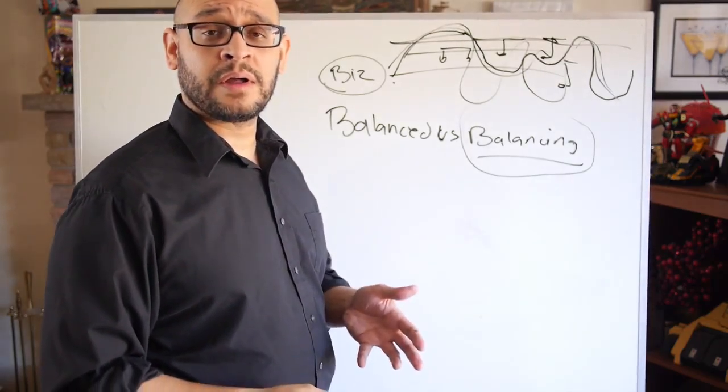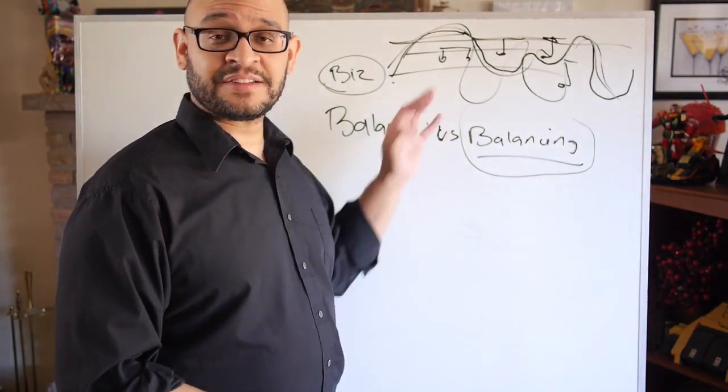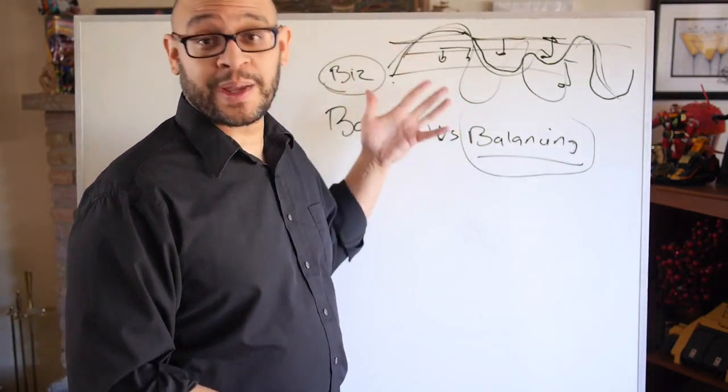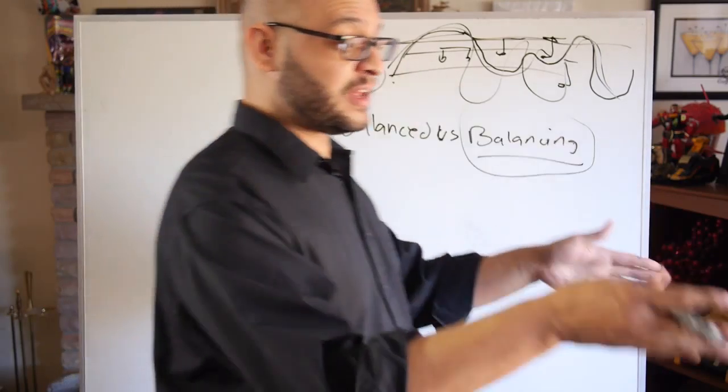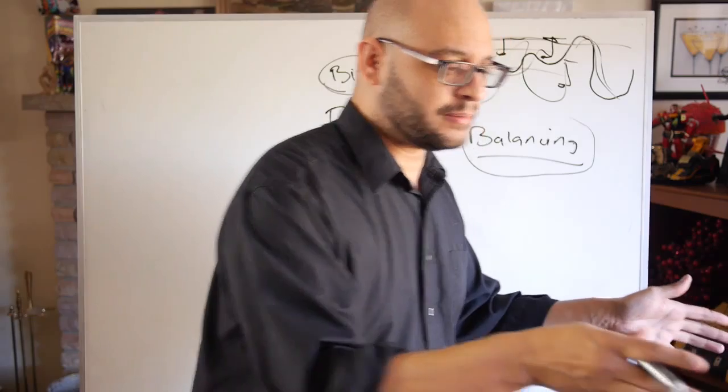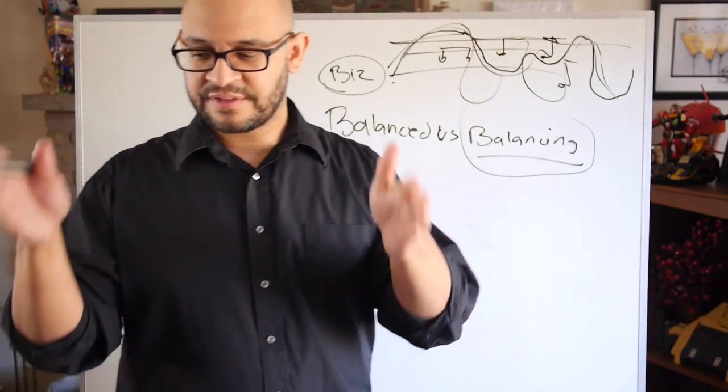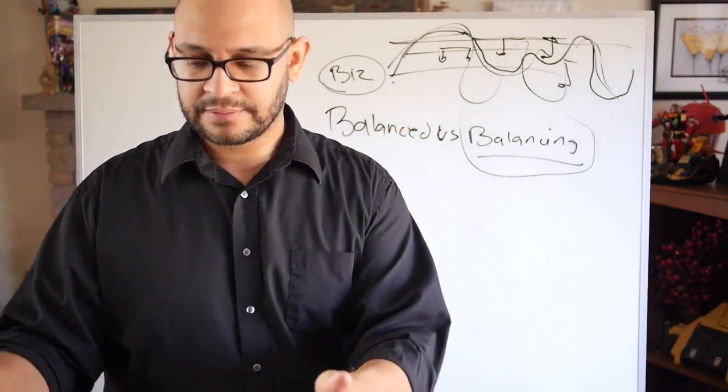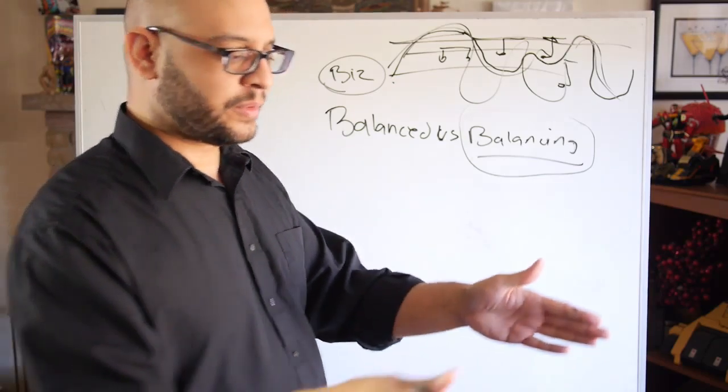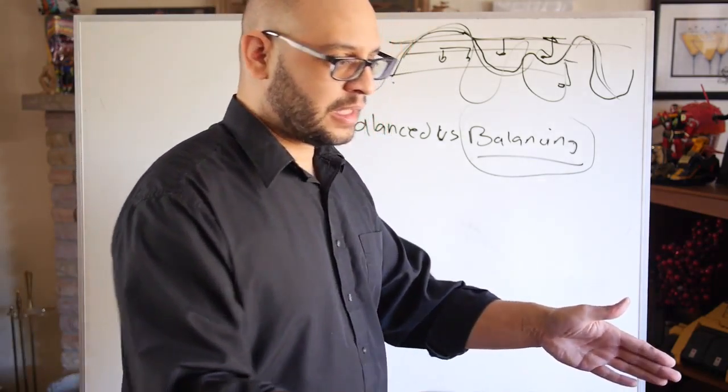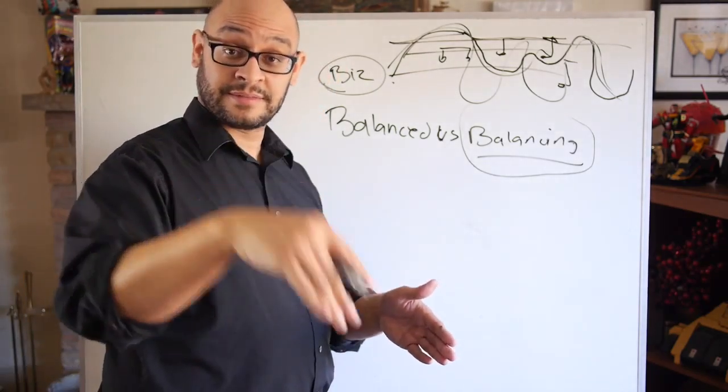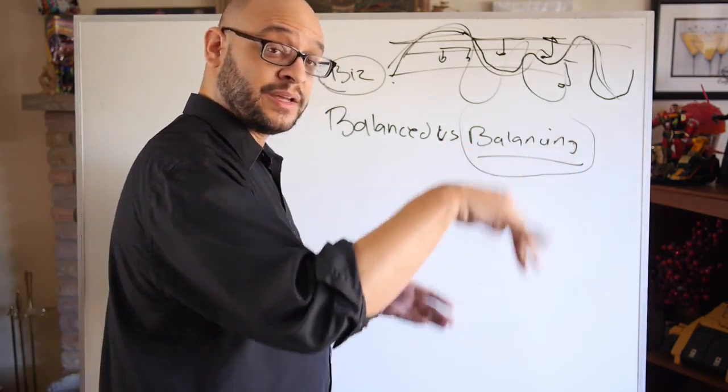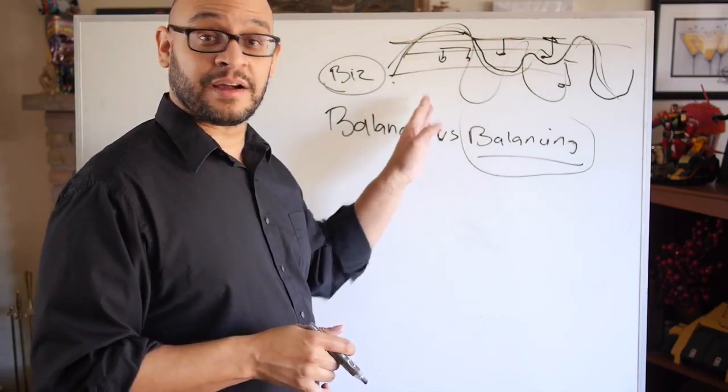It's an ebb and flow. It's an ebb and flow of harmony. This is what life looks like when you're doing it right. It's harmony. You spend 80% of your thoughts and efforts on the business, move over, and then spend your time with your family. When you're with your family, spend time with your family. It's an ebb and flow. It's a harmony to create the symphony of your life.